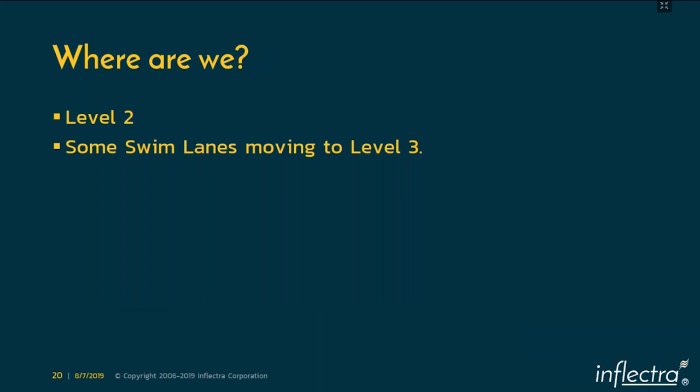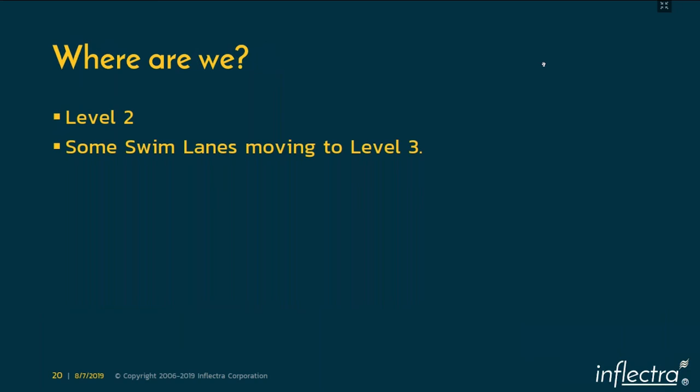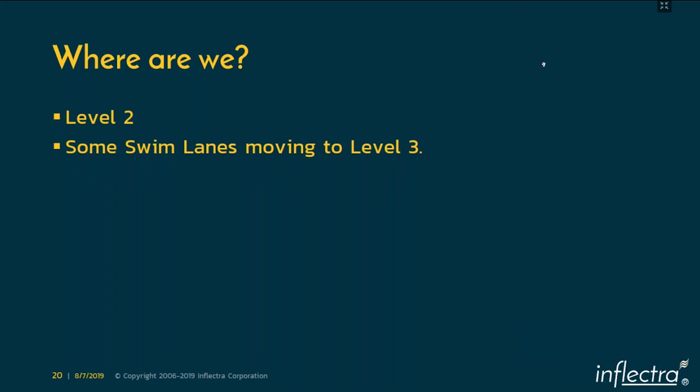Where are we now? I see that we are currently somewhere at level two. The industry is at level two with some movements towards level three, mostly due to new startups and achievements over the last two or three years. We are still far from level three. Looking ahead, I would say we should expect level three to be substantially complete within the next five to ten years — not 100% complete, but the industry will be more at level three than level two.